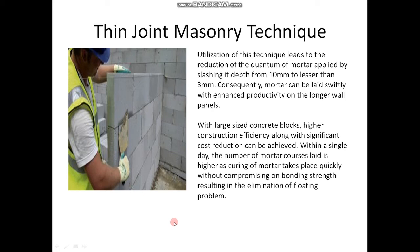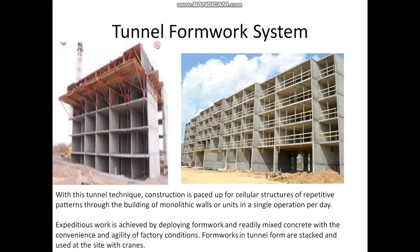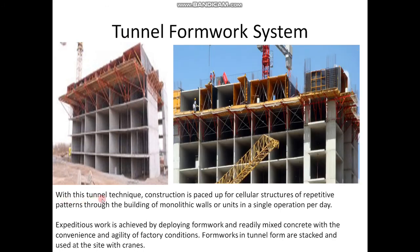The next important type is the tunnel formwork system. With this tunnel technique, construction is paced up for several structures of repetitive patterns through the building of monolithic walls or units in a single operation per day. Expeditious work is achieved by deploying formwork and ready-mixed concrete with the convenience and agility of factory conditions. Formworks in tunnel form are stacked and used at the site with cranes. From this picture, you can see the construction process of a cellular structured building ongoing using the tunnel formwork system.